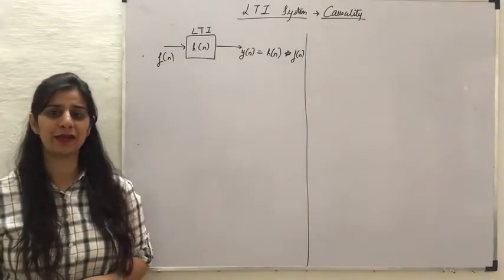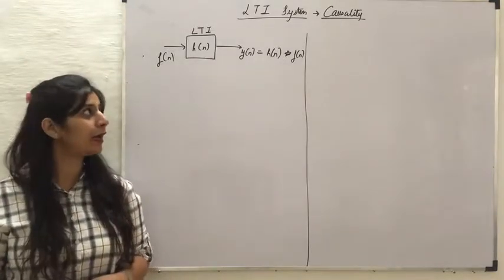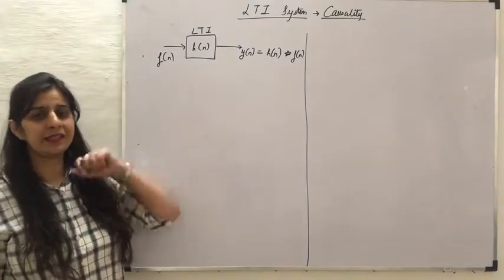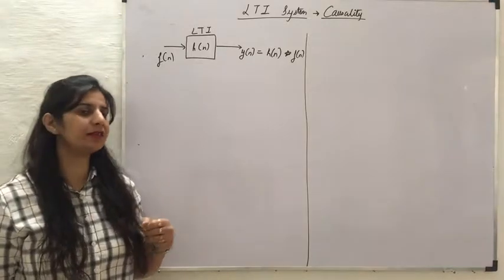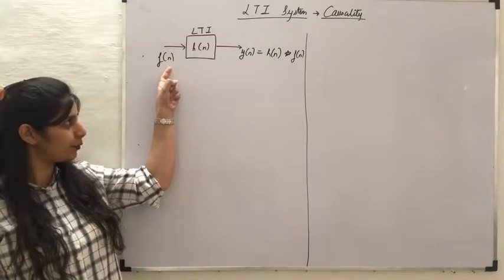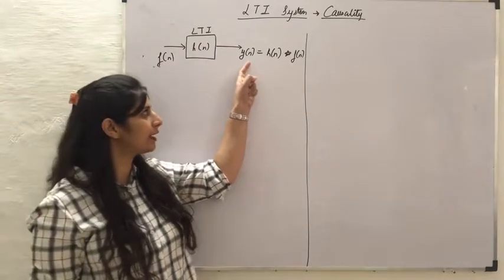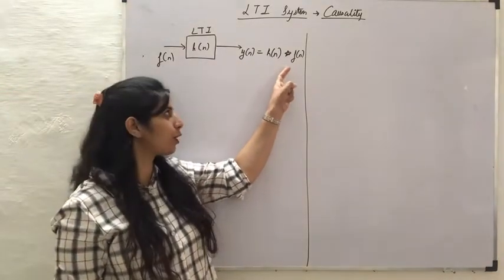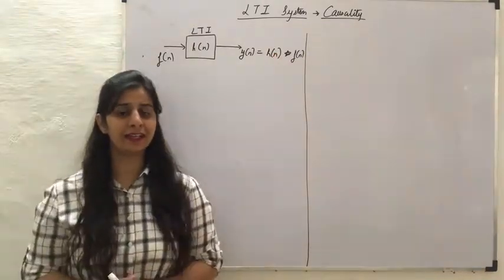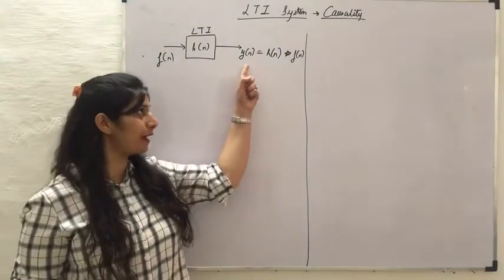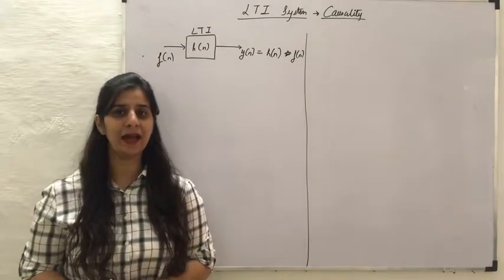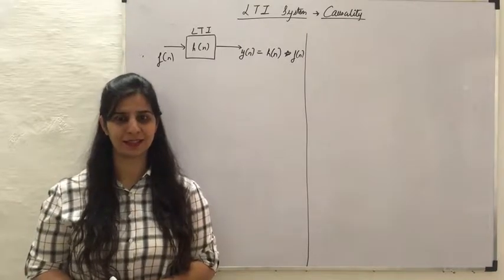The system I am considering to explain the causality of an LTI system is a discrete time system. This discrete time system has an impulse response denoted as H(N). When I give F(N) as the input, the output Y(N) is given as the convolution of H(N) and F(N). Let us see the restriction on the values of Y(N) so that the system is causal.